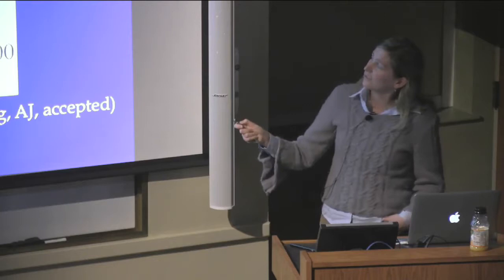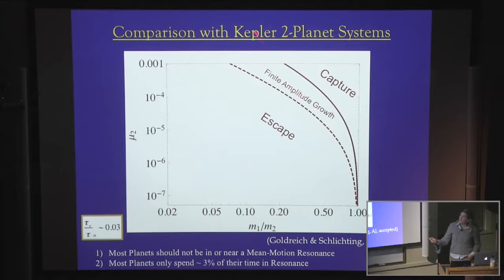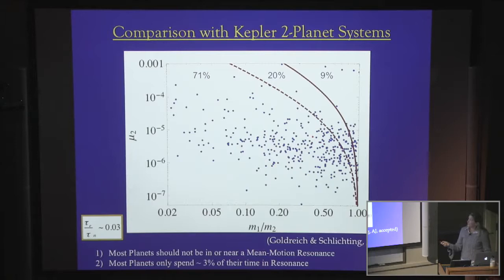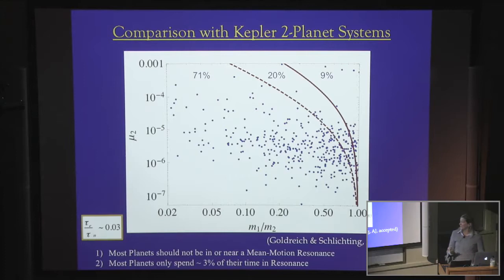There is an interesting middle region — Neptune-sized bodies that can be caught in resonance and undergo finite amplitude growth, possibly staying there for a very long time. Whether they exist probably depends on where you are in the disk. Looking at the Kepler data, most of them fall in the region where you expect resonant capture but they won't reside in resonance for a long time — only about 3% of the time. So we should not be surprised that only a small fraction of Kepler systems are in or near mean motion resonances. The paucity of mean motion resonance systems does not imply they had to have formed in situ — you can still have significant migration in the gaseous disk.